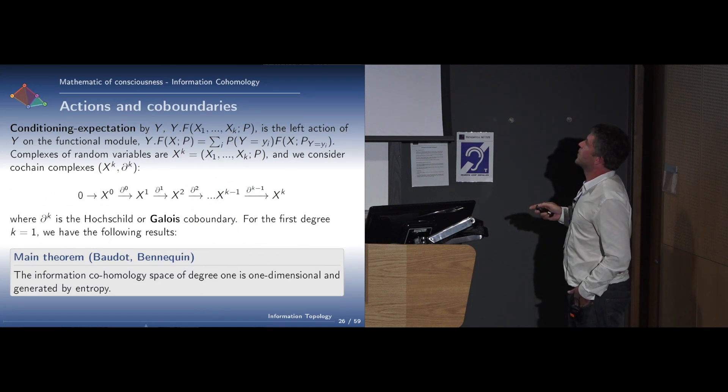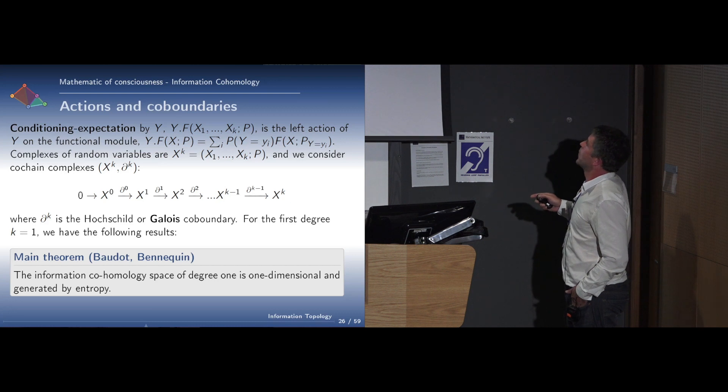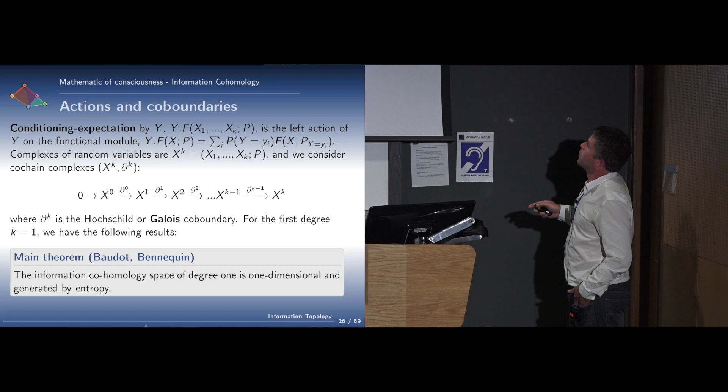The important stuff is that conditioning and expectation, conditioning information is a left action on the functional module, meaning we're going to write it like this for the information of X conditioned by Y, which is going to correspond exactly to the conditional entropy. We define the complex of random variables with the coboundary, which is exactly the coboundary of Hochschild and Galois coboundary.